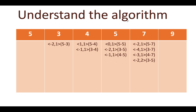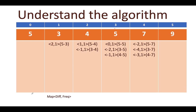For every new i-th entry, we check all possibilities from index 0 up to i. So for each i, j iterates from 0 to i-1. I'm using a slightly different example: elements are [5, 3, 4, 5, 7, 9]. For i=0 there are no prior elements, so we skip it. For i=1, we run the inner loop starting from j=0.